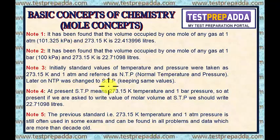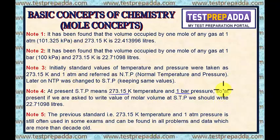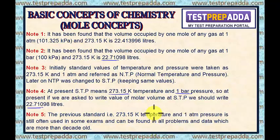Later, NTP was changed to STP, keeping the same values. But at present, STP means 273.15 K and 1 bar pressure. So if you are asked to write the molar volume at STP, you should write 22.7 liters. However, the previous standard of 273.15 K and 1 atm is still often used in some exams and in problems and data more than a decade old.